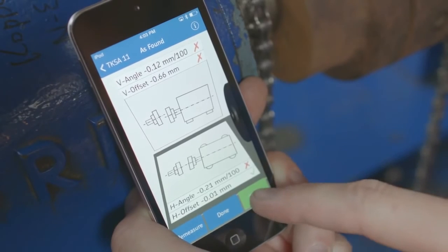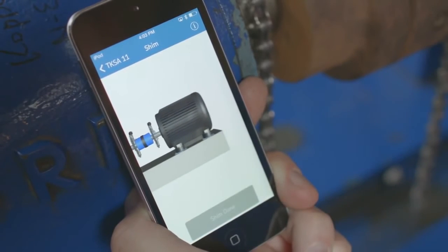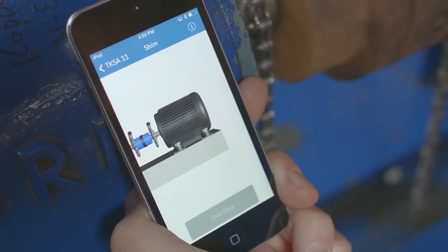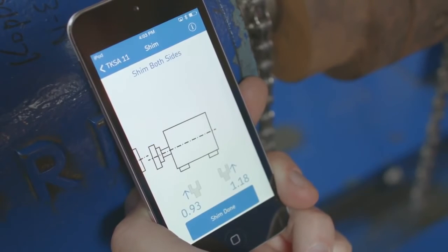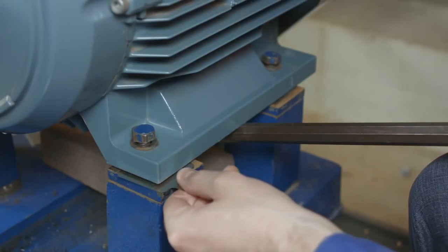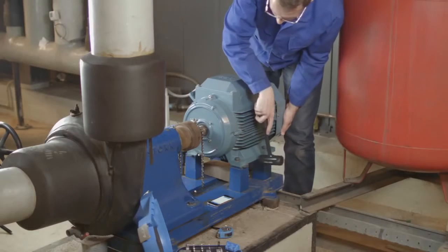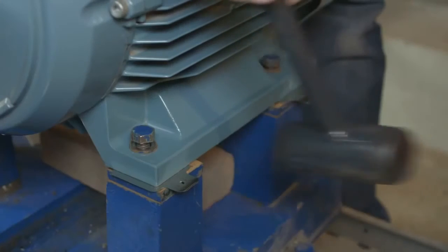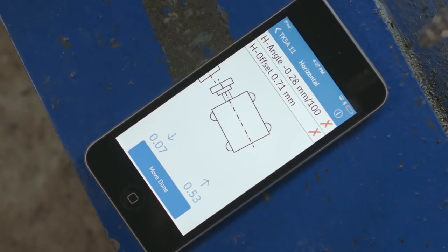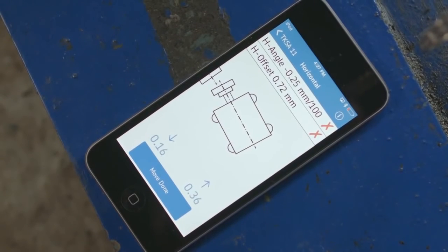After determining the current shaft misalignment, the app guides you through the alignment process. First, by showing what shims are needed for the vertical alignment, and then which movements need to be performed for horizontal alignment. The live view helps you quickly achieve accurate positioning.